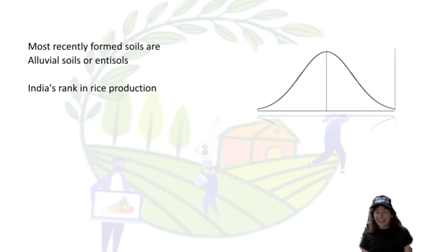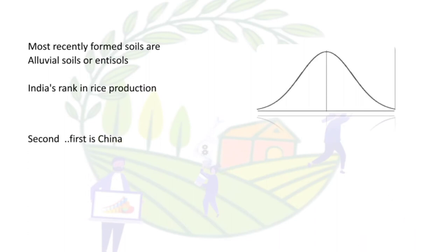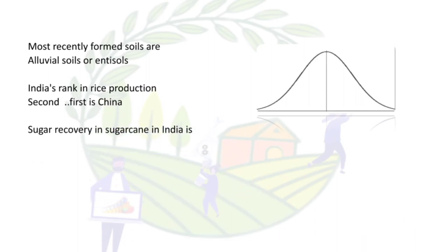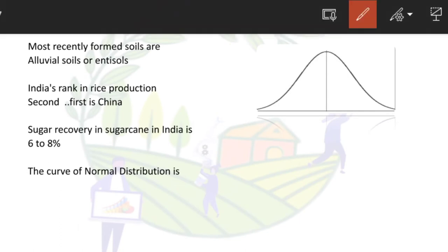India's ranking in rice production is second — first is China. Sugar recovery in sugarcane in India is 6 to 8 percent.